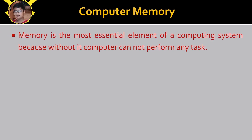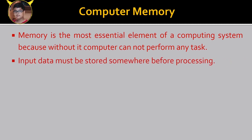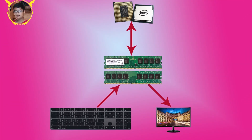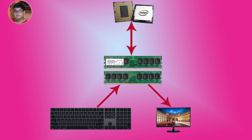Memory is the most essential element of a computing system because without it a computer cannot perform any task. Input data must be stored somewhere before processing, and the processed data must be stored somewhere before sending it to an output device. The input data is stored in RAM before processing, and after processing in the CPU, the processed data is sent back to RAM and then forwarded to the output device.